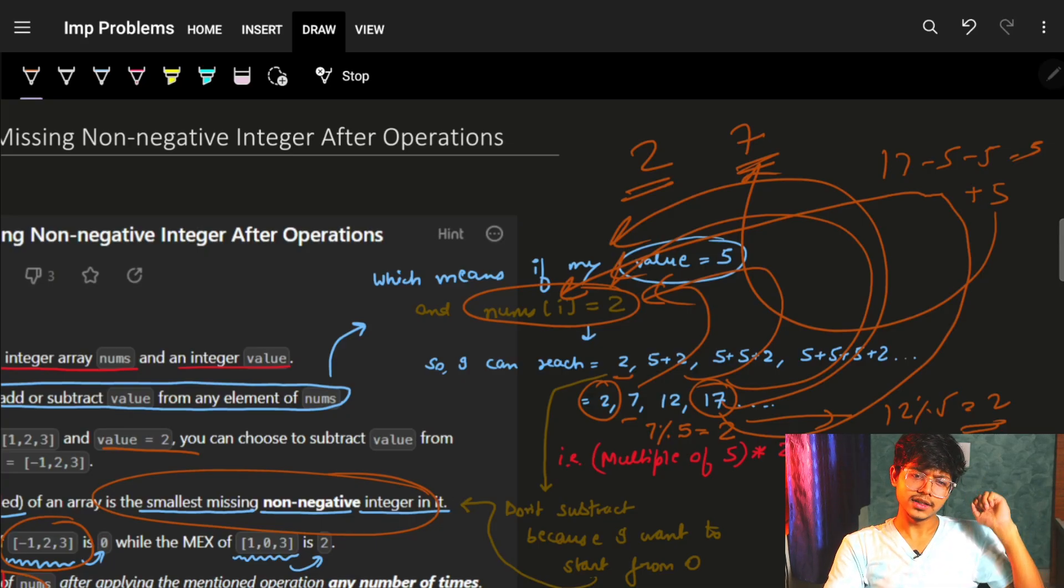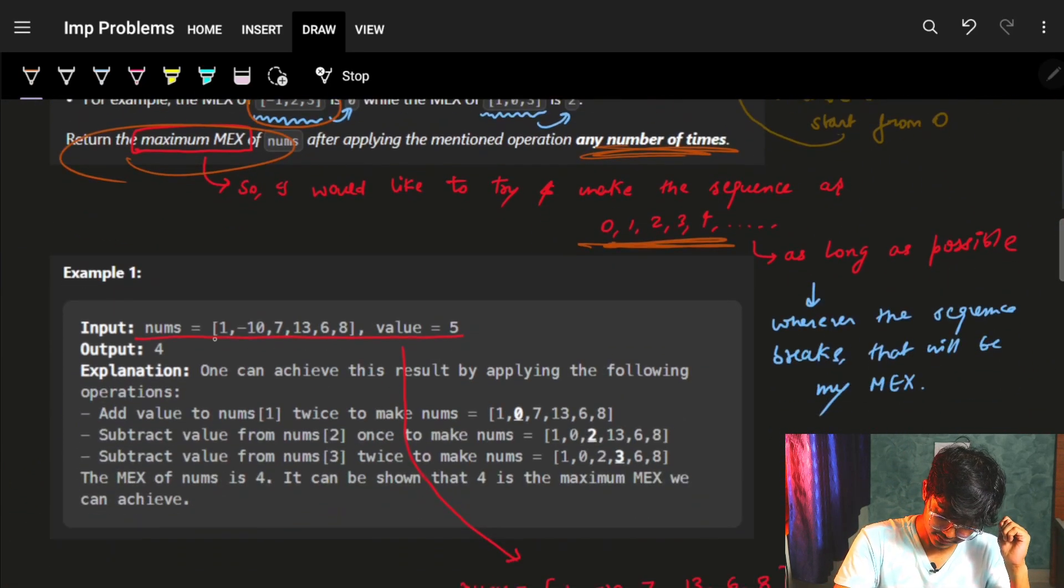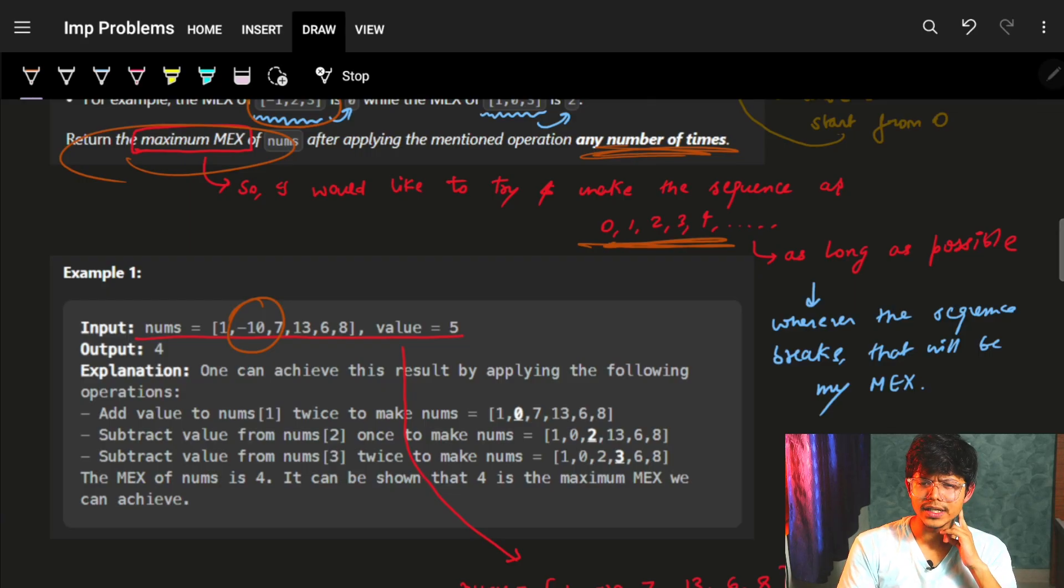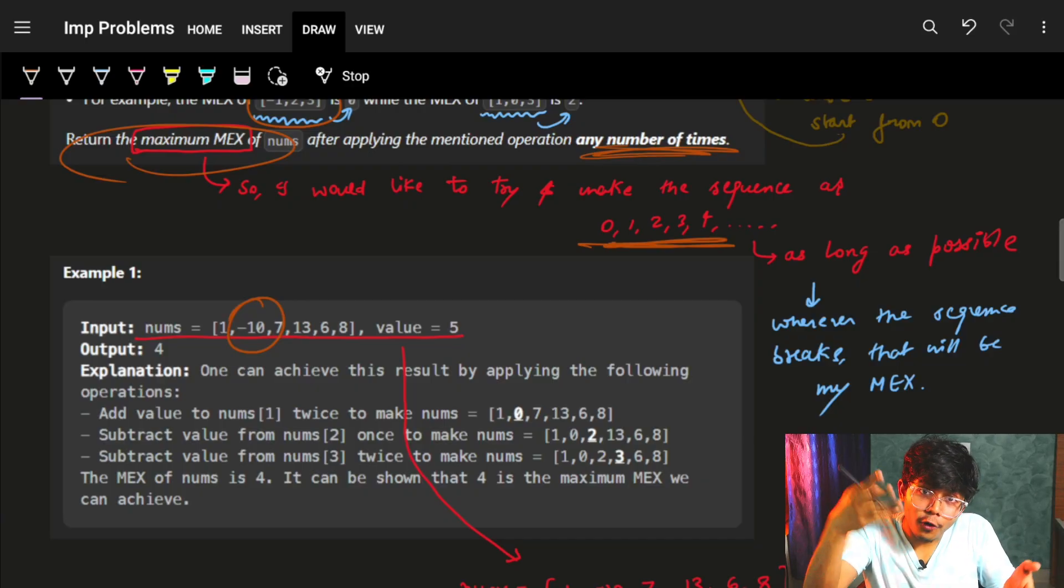But the numbers can be negative also, right? Negative also. How to handle them? Because if the number is negative, it's of no use to me because my MEX will for sure start from 0 itself.